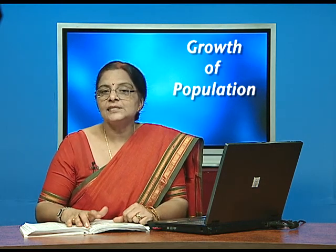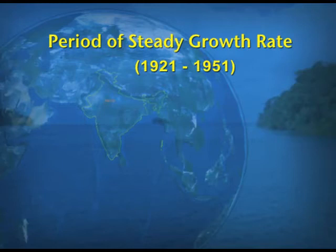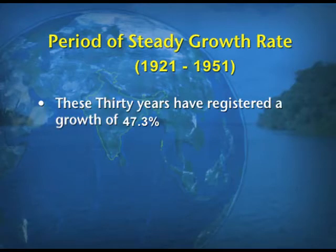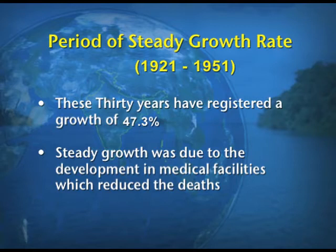The second stage is the period of steady growth rate from 1921 to 1951. These 30 years registered a total growth of 47.3%. This steady growth was due to the development of medical facilities, which reduced death rates, and a decline in deaths caused by drought conditions.